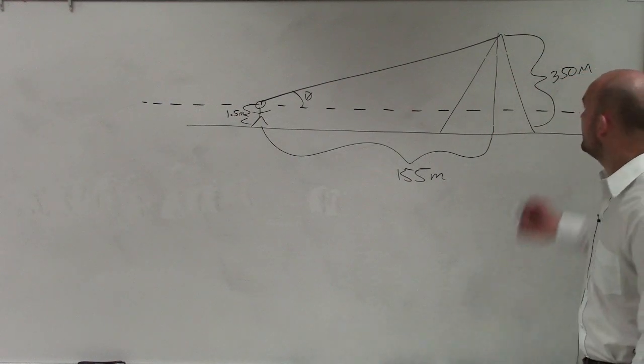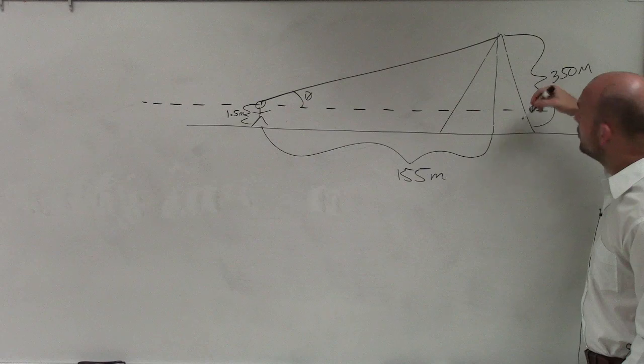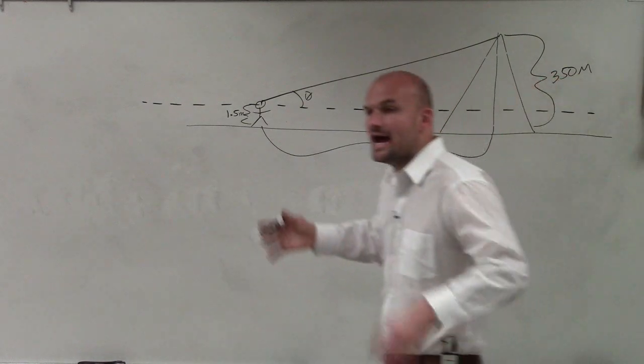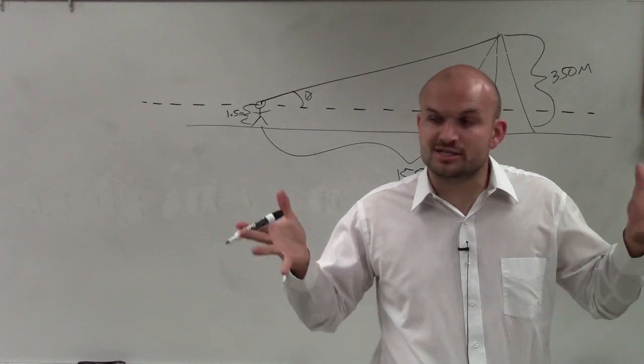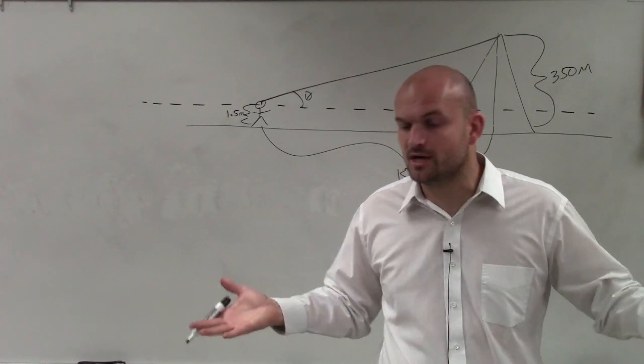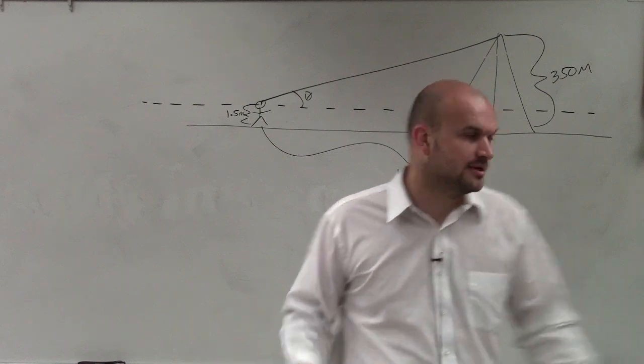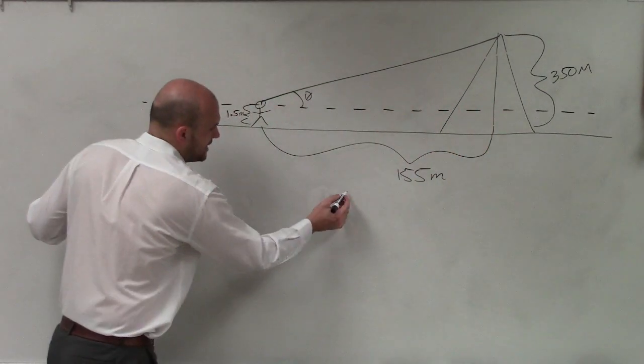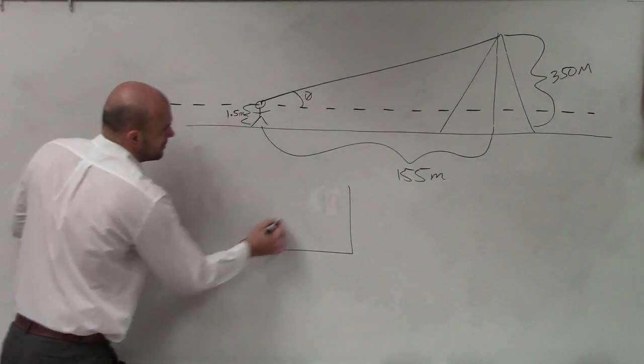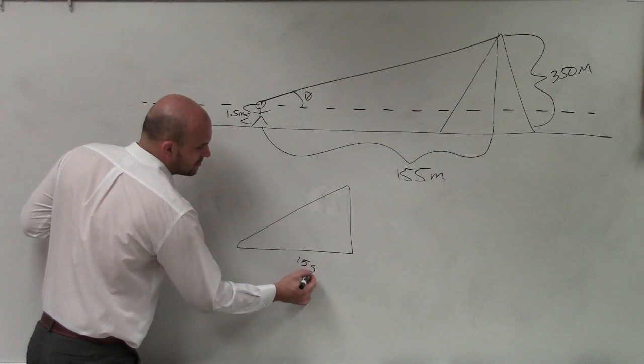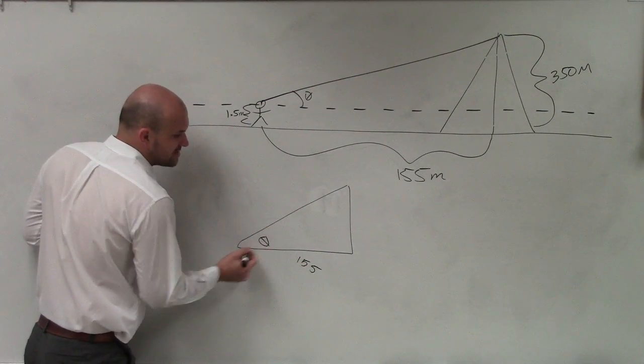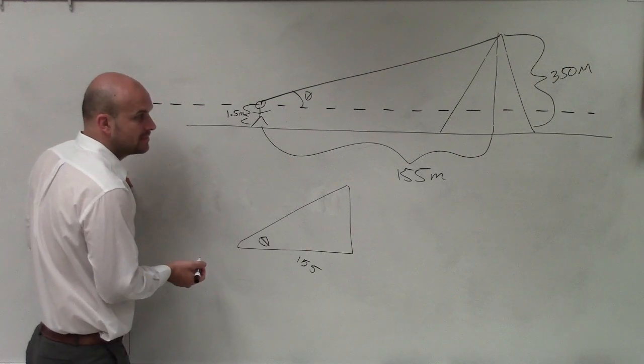So ladies and gentlemen, if the whole mountain is 350, we're not concerned about the whole mountain. What I like to do is draw the picture, and then extract the triangle, because really all we care about is what the triangle is. We know this length is 155. We don't know what our angle is. I'll call that theta.